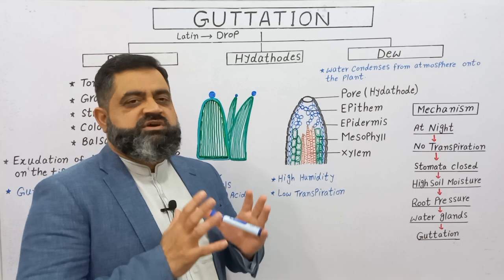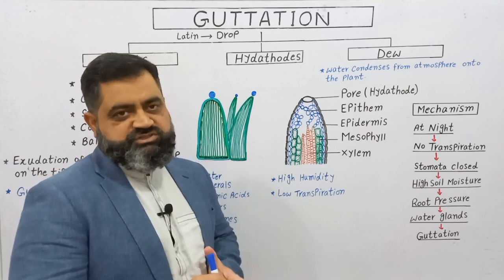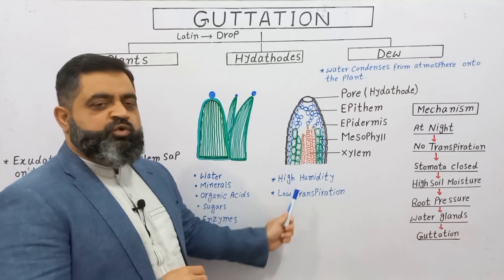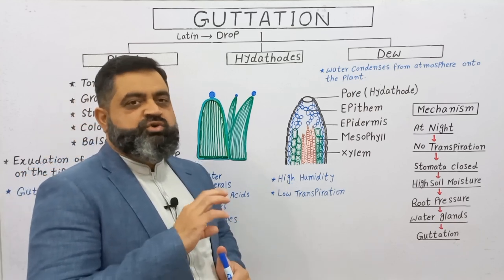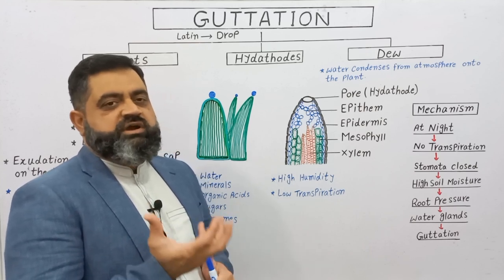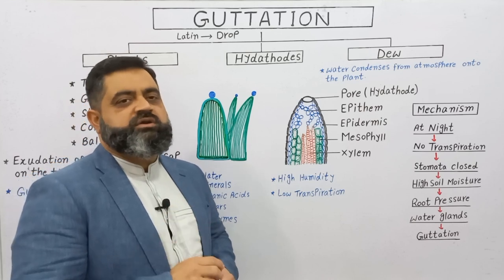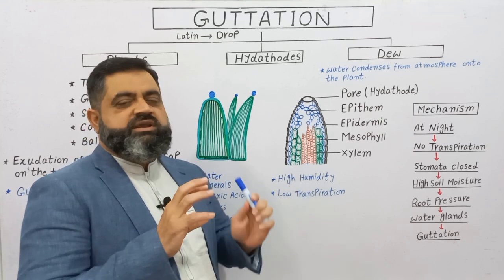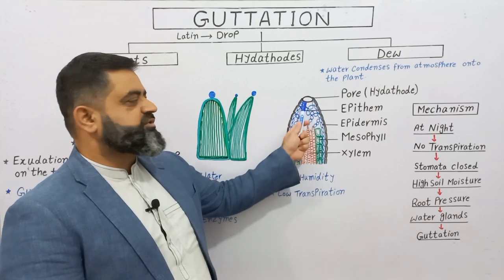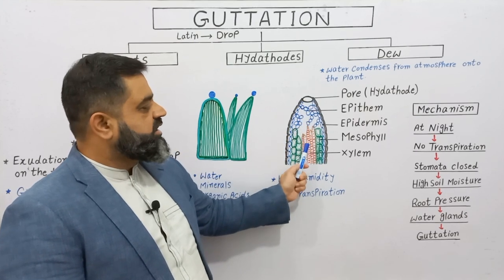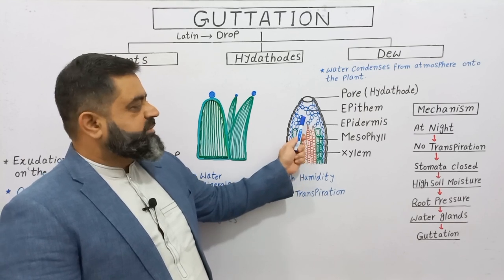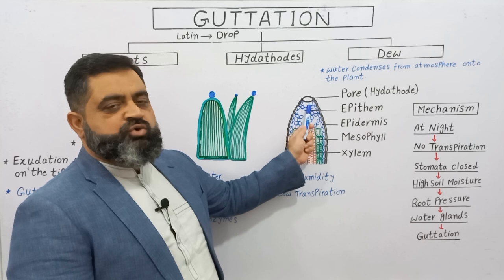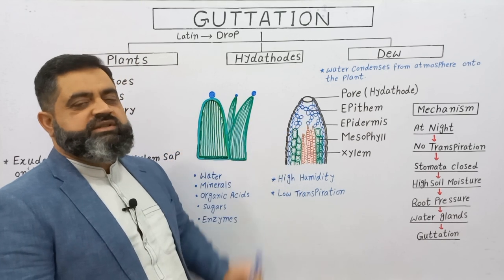There are two critical conditions essential for guttation: number one, high humidity; number two, low transpiration rate. When there is high humidity in the atmosphere or soil and no transpiration is taking place, guttation occurs. During low transpiration, stomata are closed. Water absorbed by the roots enters the xylem, creating a root pressure. This root pressure travels up to the tips of the leaves, and water from the xylem enters the epitheme and is then exuded out through the hydathode pores in the form of little droplets.